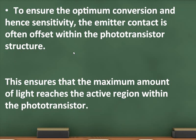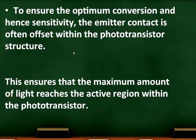To ensure optimum conversion and hence sensitivity, the emitter contact is often offset within the photo transistor structure. This ensures that the maximum amount of light reaches the active region within the photo transistor.